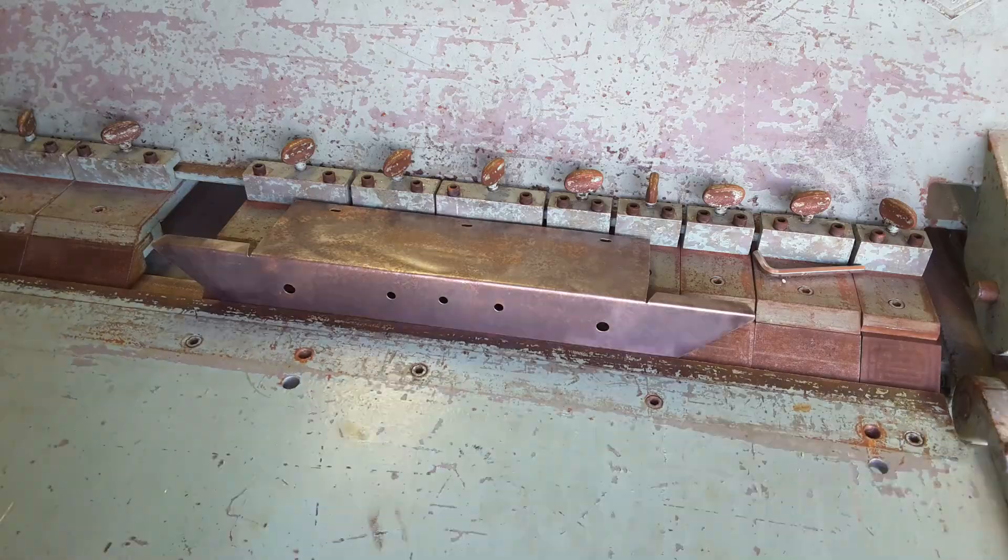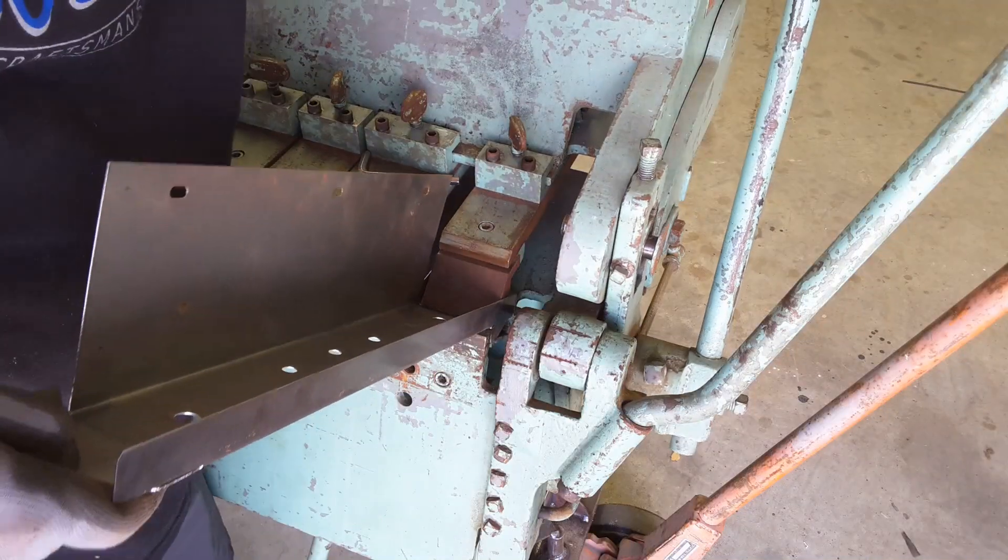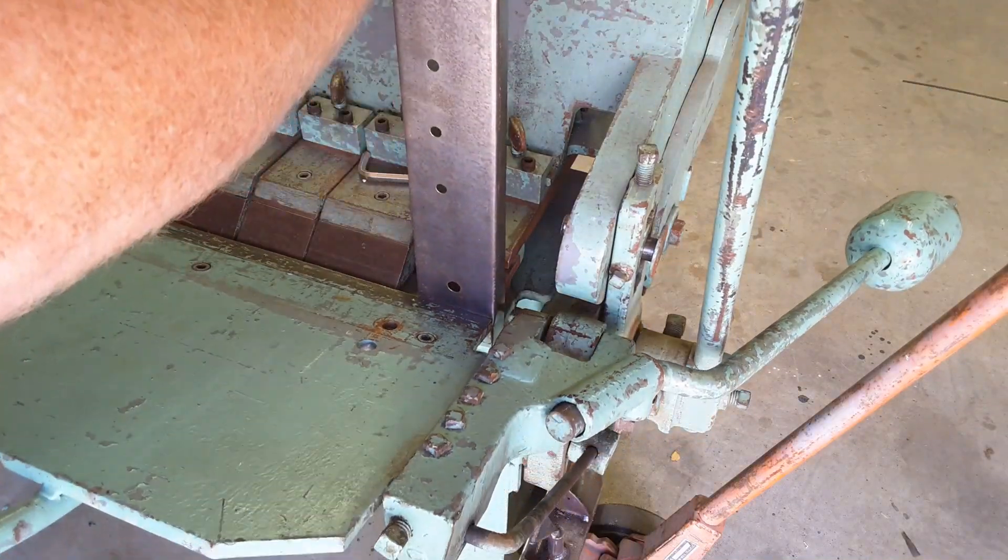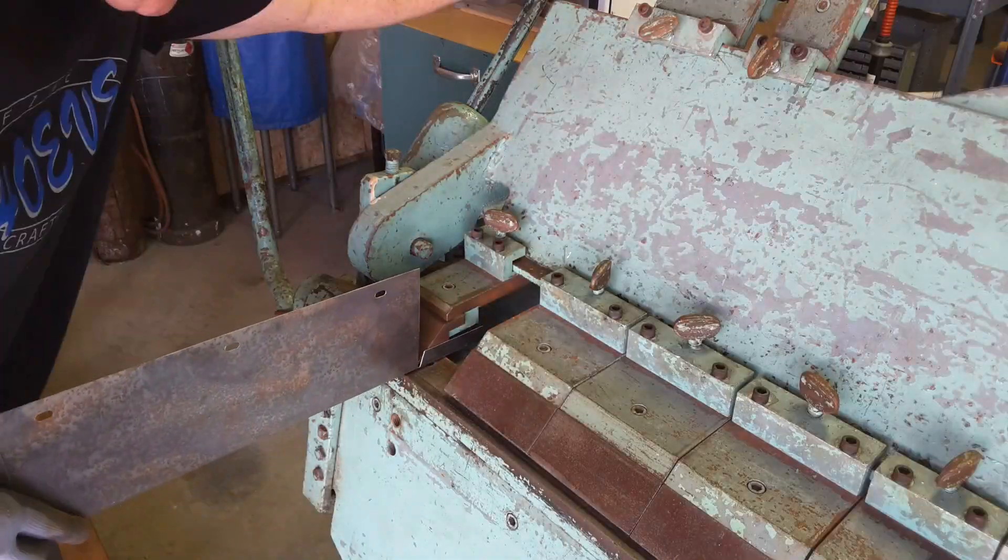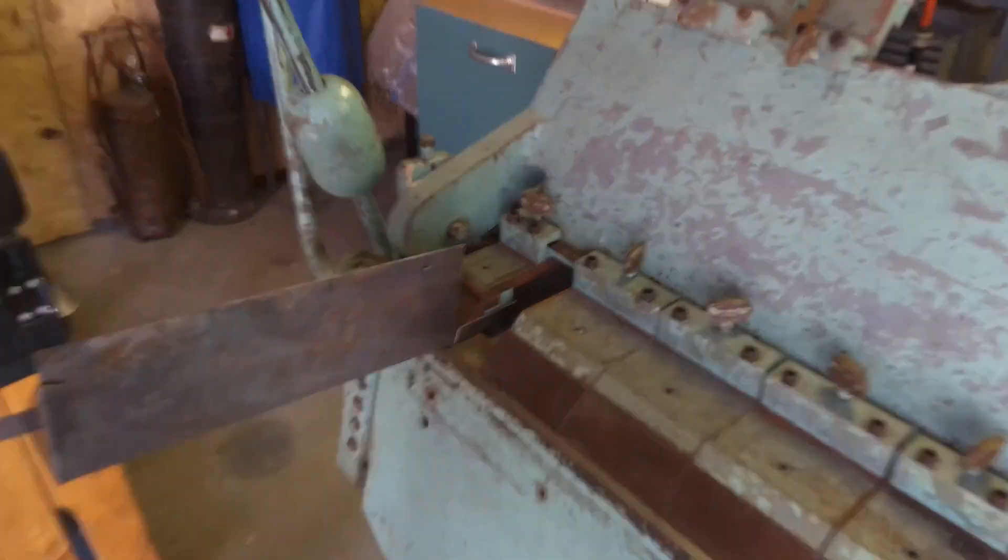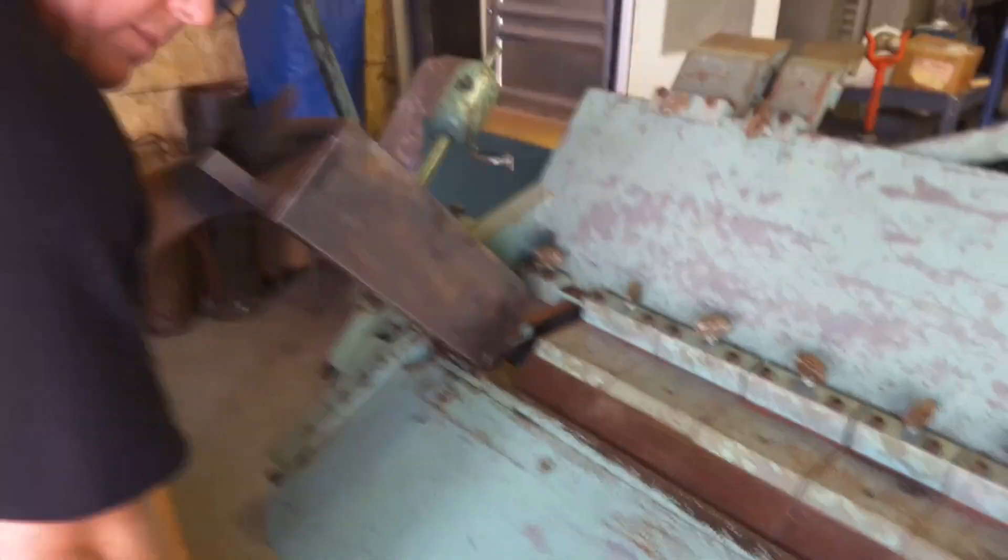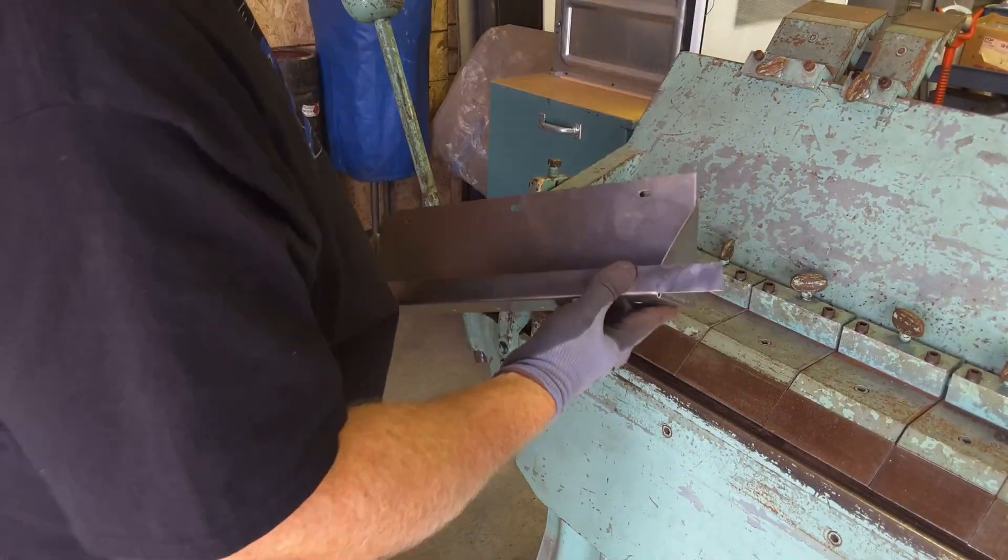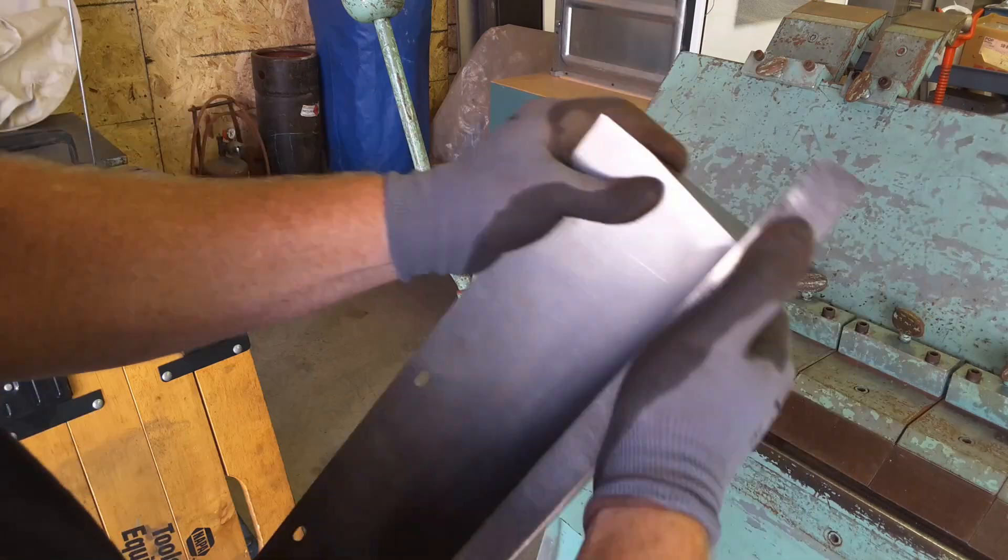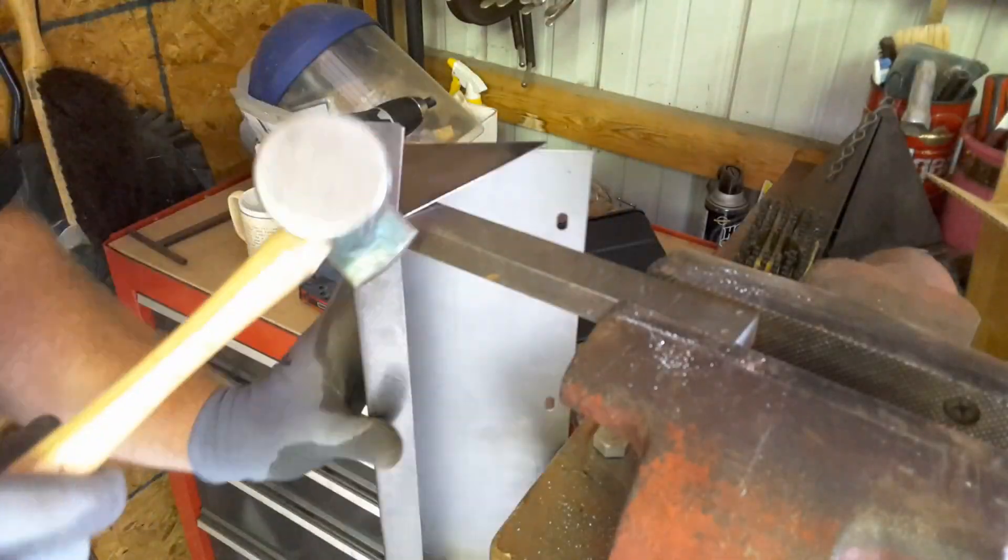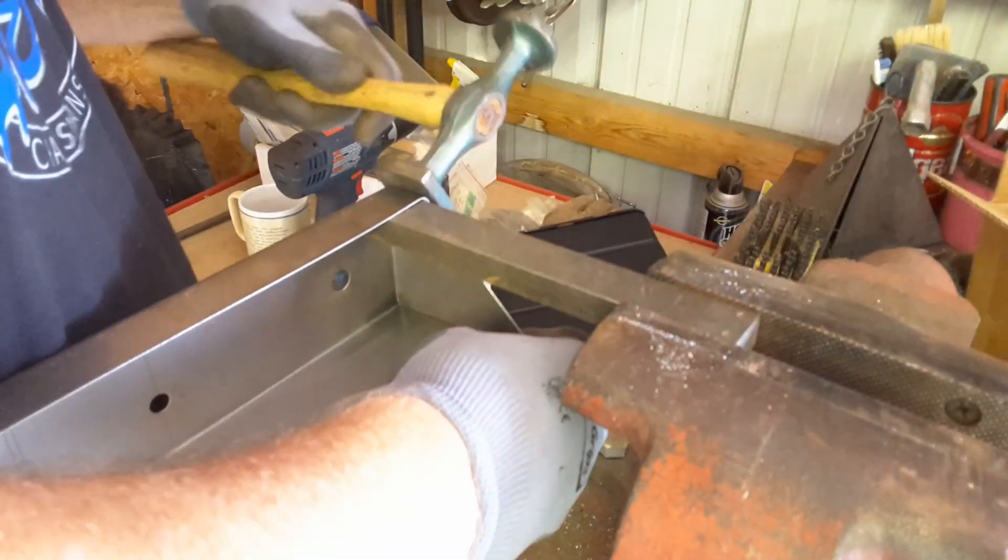Next I went over to my box and pan break and after all of that lead up I forgot to start my camera so we missed the first couple of bends. But here it is doing what I can then I adjusted some fingers to start doing the ends. For this last tab I went over to the vise and used a hammer then a couple of pop rivets and some spray paint and it was done.